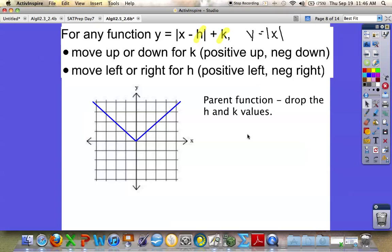Now, if I were to add an H, let's say I made this Y equals the absolute value of X minus 3. From your previous lesson, you know that that moves this graph, not negative 3, but actually positive 3 units. So I would take this graph and move it 1, 2, 3 units, and that would be my new graph.